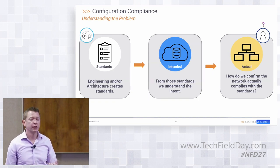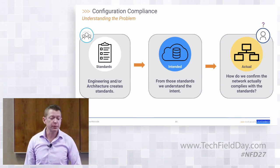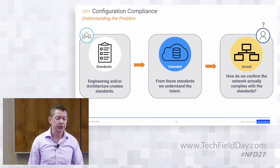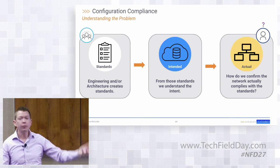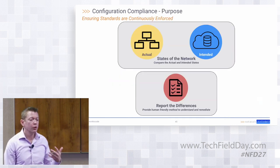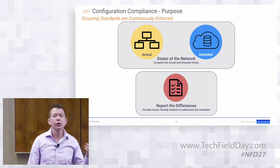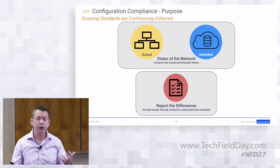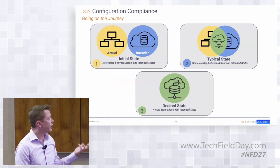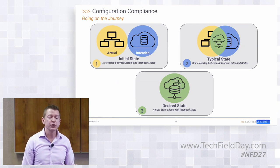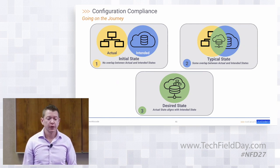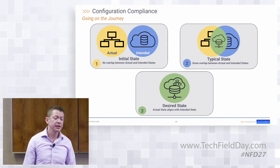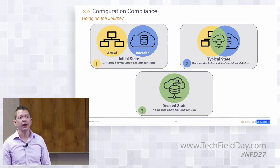Highlighting the problems: we have our standards that someone in the engineering or architecture team has set, and we then proceed to promptly ignore them most of the time — or at least part of the network isn't following those standards. We have the intent that came from the standards body, but how do we actually confirm it's out there in the real world? The goal of a configuration compliance tool is to ensure that policies and standards are continuously enforced in the environment, comparing actual state versus intended state and reporting on the differences. In many environments, the initial state where actual and intended may not overlap at all, while a more mature environment shows some overlap, with the goal being complete alignment.